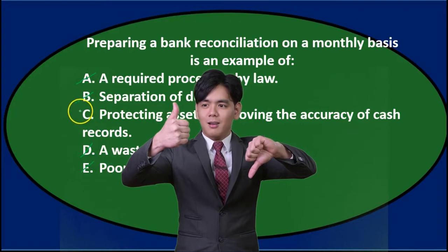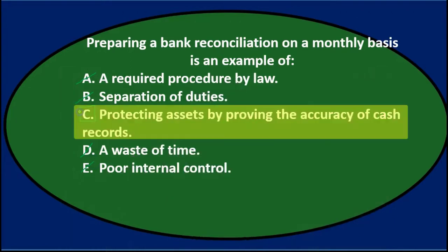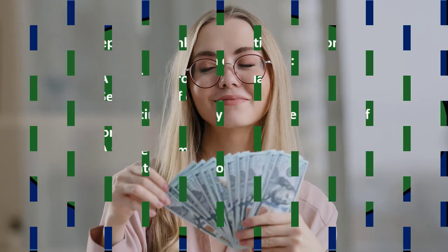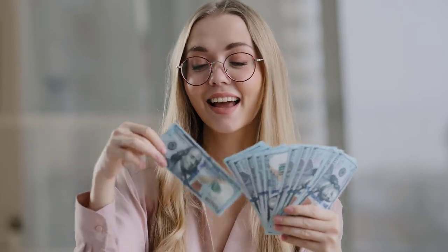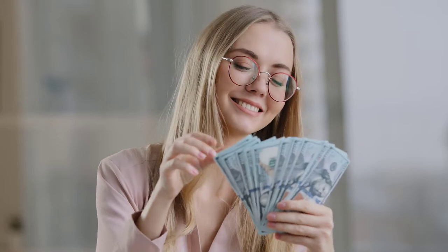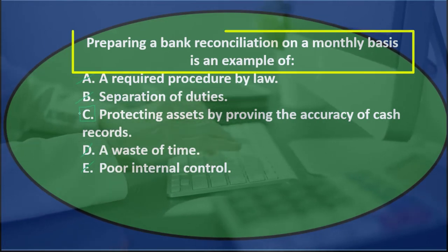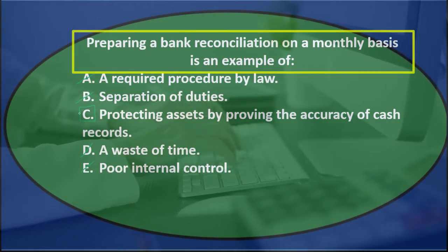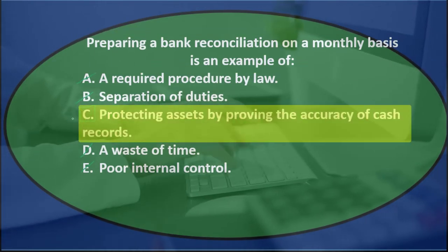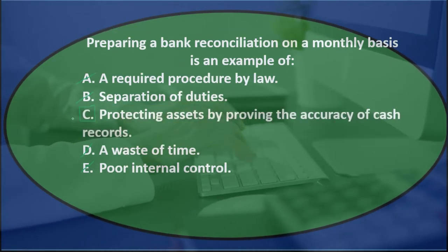So by the process of elimination, we're basically left with C, which says protecting assets by proving the accuracy of cash records. We're double-checking the cash records against a third party — the bank — to double-check the activity that has happened, thereby getting a better understanding of cash which could help us protect the assets. Question and answer: Preparing a bank reconciliation on a monthly basis is an example of C, protecting assets by proving the accuracy of cash records.